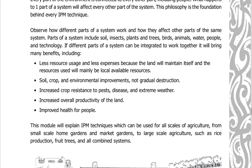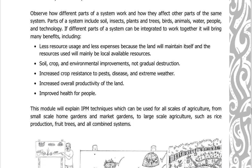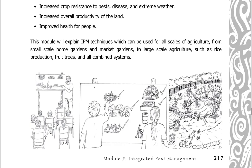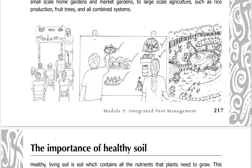Benefits include soil, crop, and environmental improvements — not gradual destruction — increased crop resistance to pests, disease, and extreme weather, increased overall productivity of the land, and improved health for people. This module will explain IPM techniques which can be used for all scales of agriculture, from small-scale home gardens and market gardens to large-scale agriculture such as rice production, fruit trees, and all combined systems.